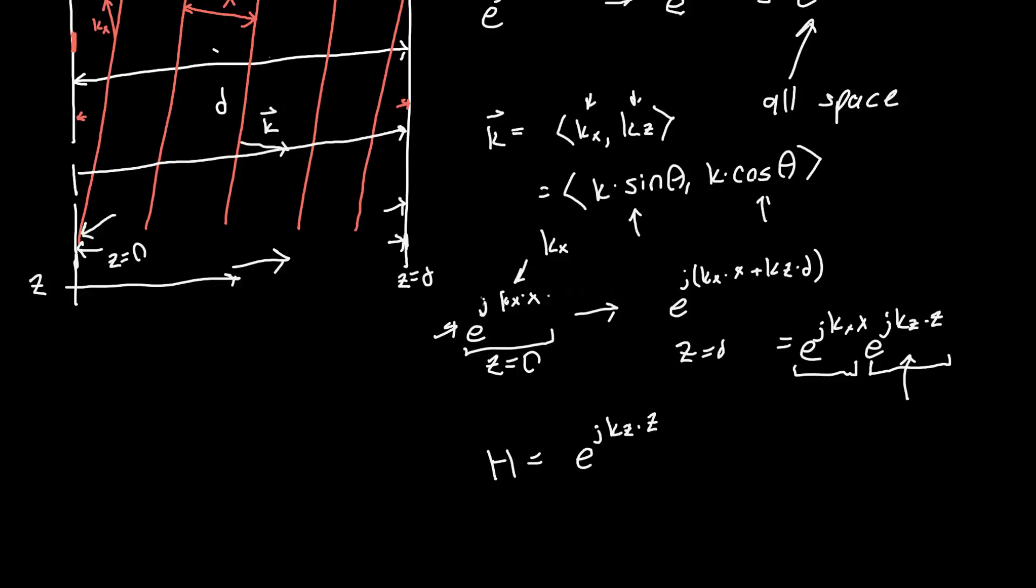I guess we should put, since we're propagating a distance d, we really should put d here. So e to the j kz times d. And this is the transfer function for propagating some distance d.